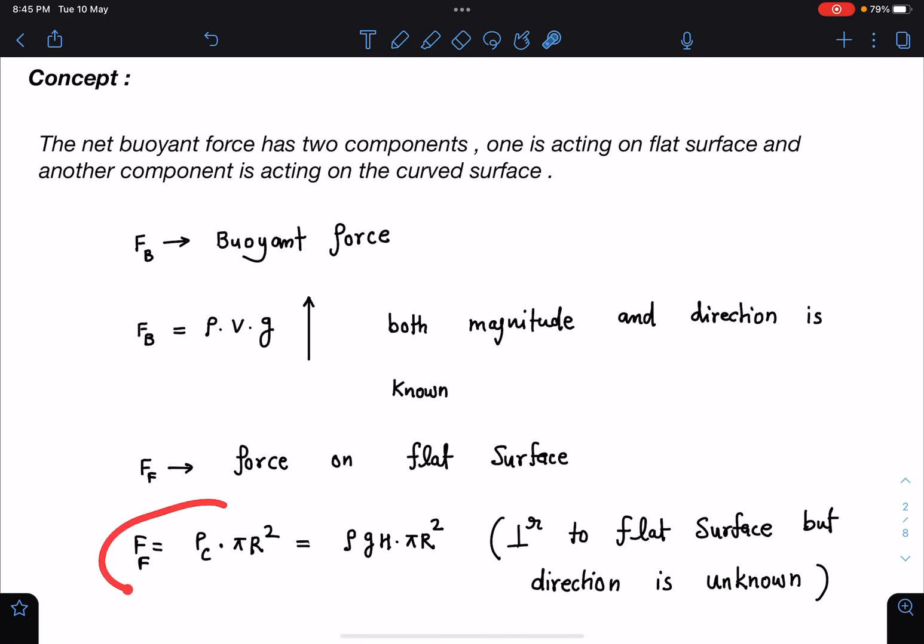So I am using the trick here. Those who want to know this trick can access my theory lectures. It is a pretty common result that on a flat surface we can always write for uniform density liquid that pressure at the center of area into area of that object. So pressure at that is ρgh, h is the vertical height from the free liquid surface into πr².